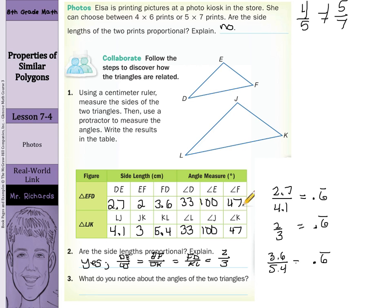DE over LJ equals EF over JK equals FD over KL, and those all equal 2 thirds. And then what do you notice about the angles of the two triangles? We noticed that the corresponding angles of the triangles have the same measure. A fancy way of saying they're all the same.